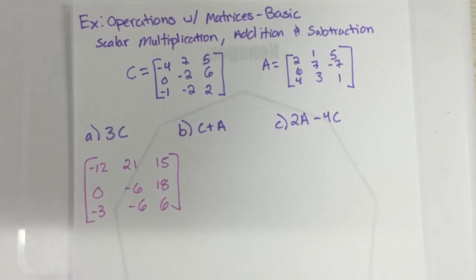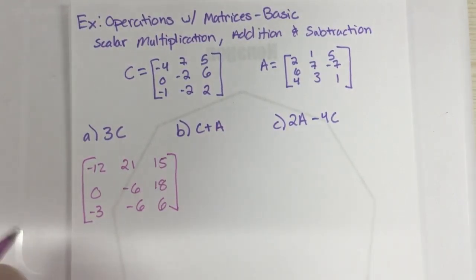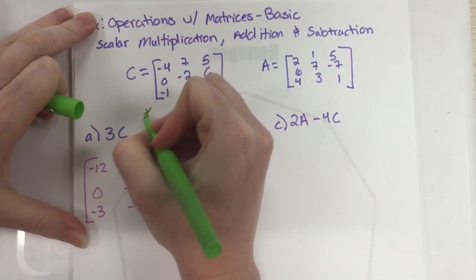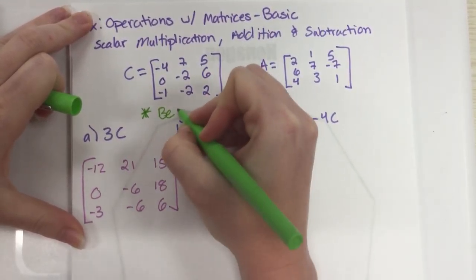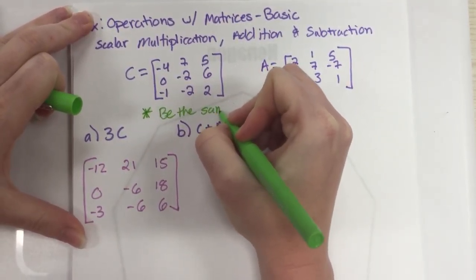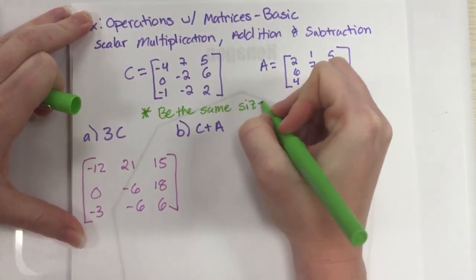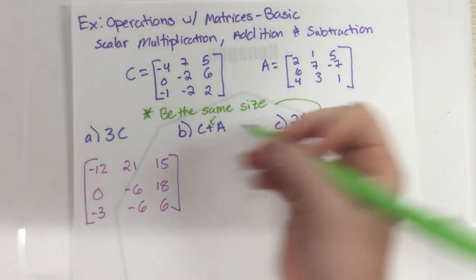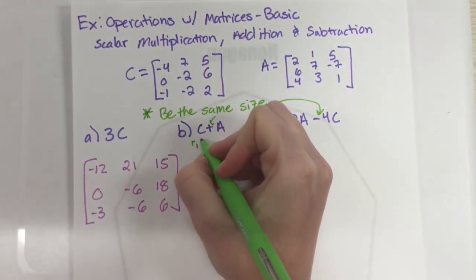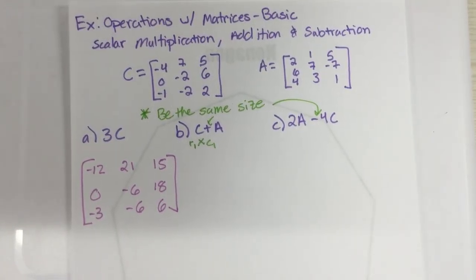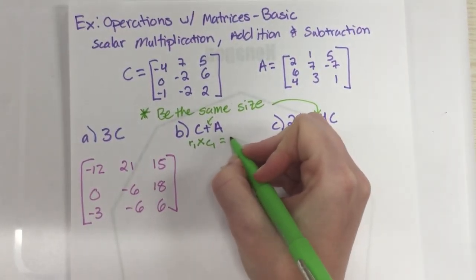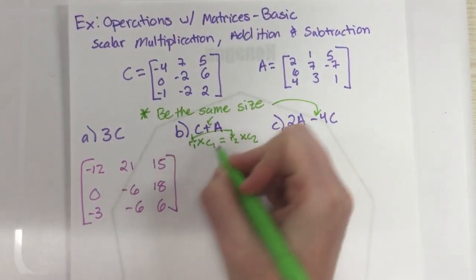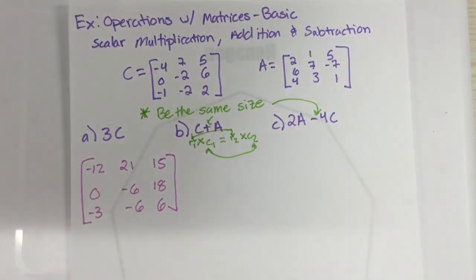In order to add, so we got C plus A. When you're going to add, there's one key thing. They have to be the same size when you're going to add or subtract. And by what I mean be the same size is, we're going to say C1 is R1 by C1, so rows by columns, has to equal R2 by C2. So these two numbers have to be the same, and these two numbers have to be the same.